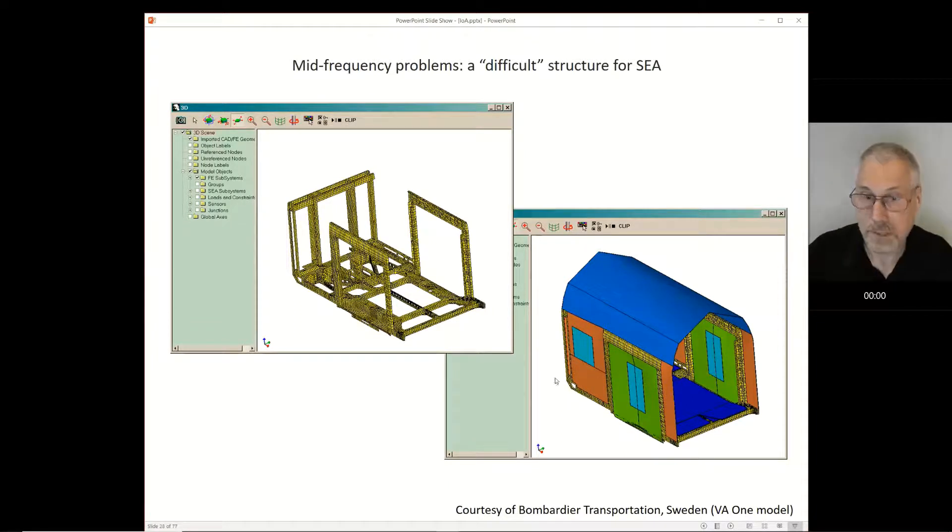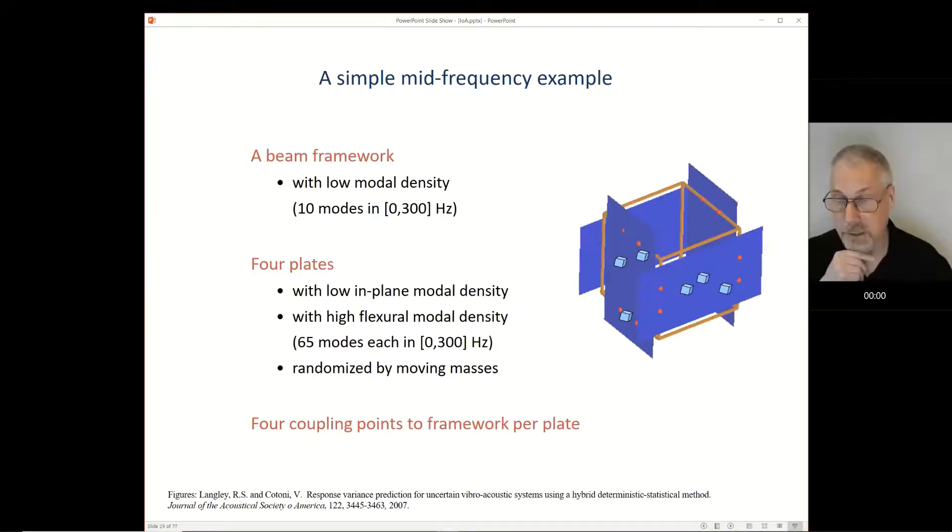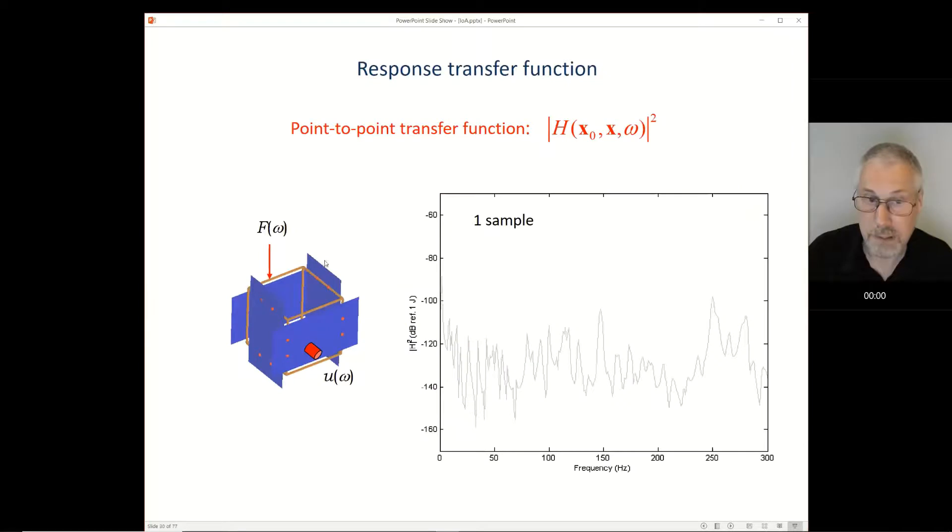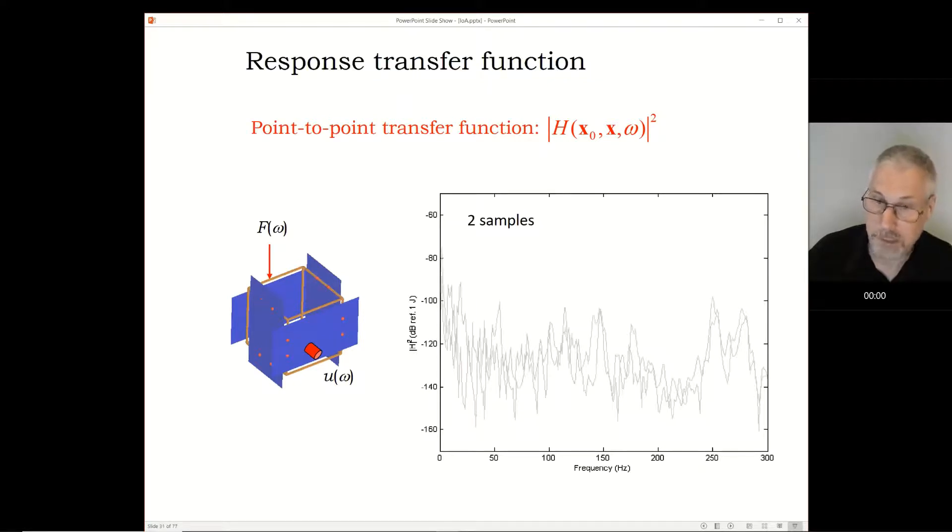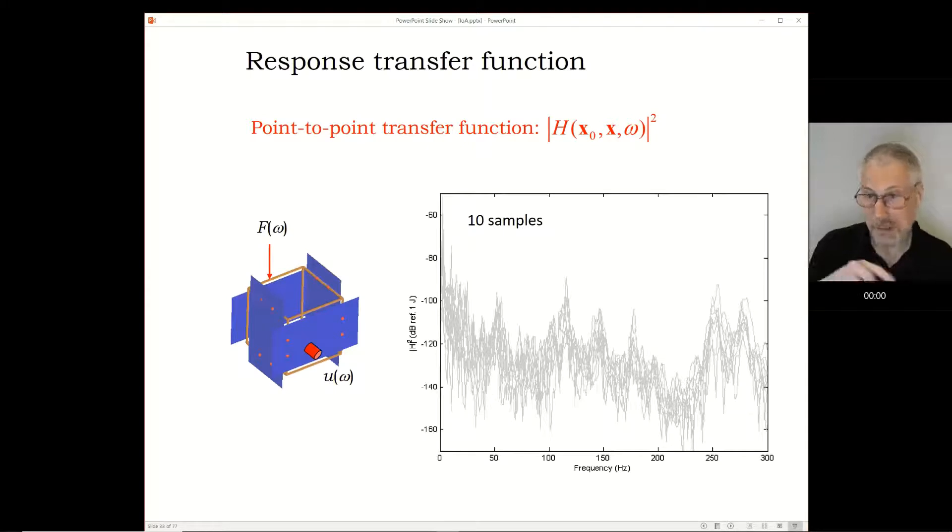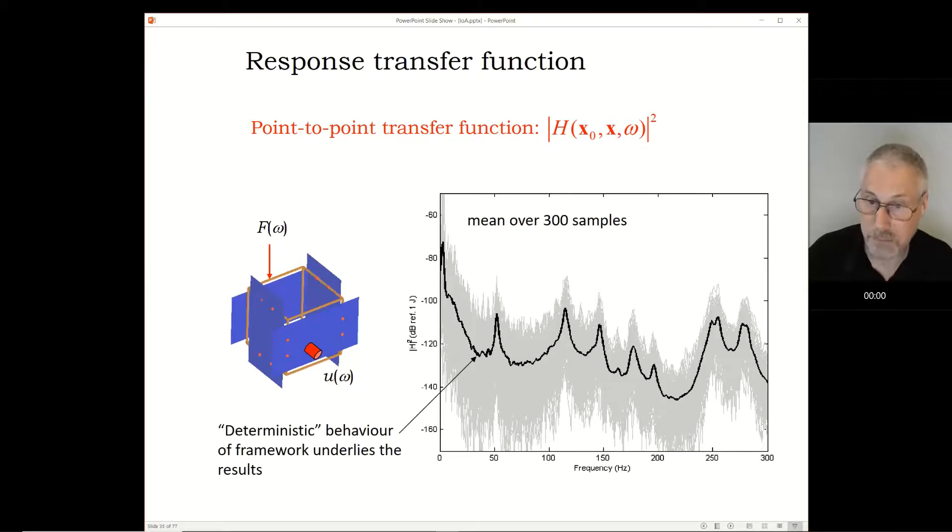Before we do that, just to illustrate why we can't just use SEA, here's a very simplified version of that train structure. What I've got is essentially just a heavy framework with some panels and masses that are randomized and moved around. An input is put on the framework and output is measured on a panel. If we just run it for one configuration of the masses, this is the result. If we run it for another configuration, we get this, then this, then this. We can start to see a structure emerge. If we do it enough and look at the average response, there's a very definite structure there. What we're finding is that whereas SEA wouldn't see that, SEA at best would give us a smooth line through those plots. This very heavy framework, which doesn't have universal statistics, is dominating a large part of the physics of the response.